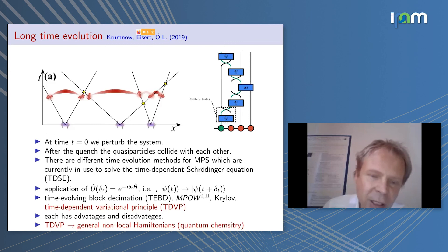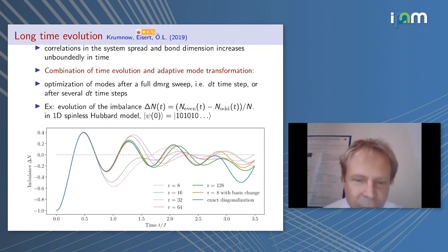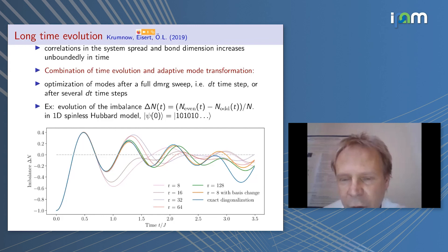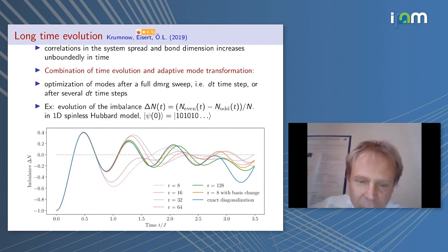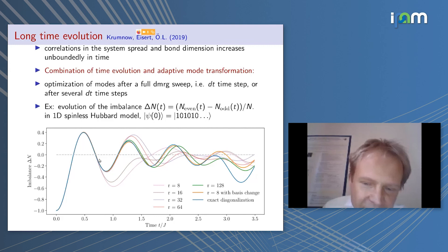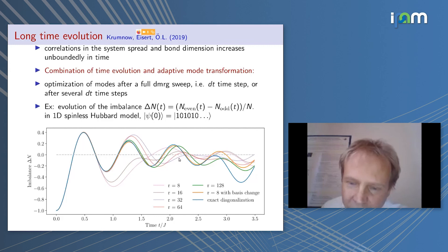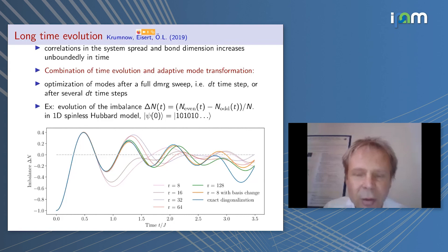Mode optimization also works in time evolution. After a quench, quasi-particles are generated that interact and create entanglement. Starting from a charge-ordered configuration and measuring the imbalance between even and odd sites, bond dimension 8 in real space already deviates from the exact solution at time 0.7. Combining with mode optimization extends accuracy to time step 2.5, effectively extending time evolution to much longer times by reducing the entanglement barrier between initial and final states.